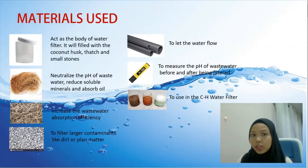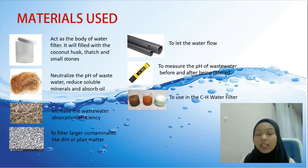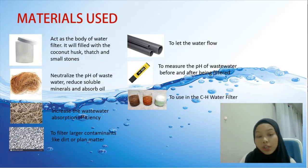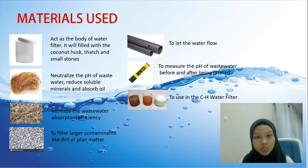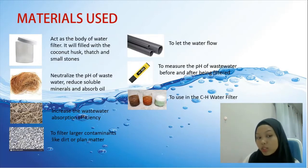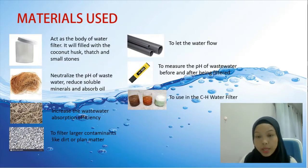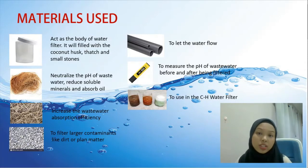So what are the materials used for this prototype? First, a container which acts as the body of the water filter. Next is coconut husk which will neutralize the pH of wastewater, reduce soluble minerals and absorb oil. The third is dry grass which is to increase wastewater absorption efficiency. The fourth is small stones which filter larger contaminants like dirt or plant matter. Next is PVC pipe to let the water flow, a pH meter to measure the pH, and the last is three types of wastewater to be used in this experiment.